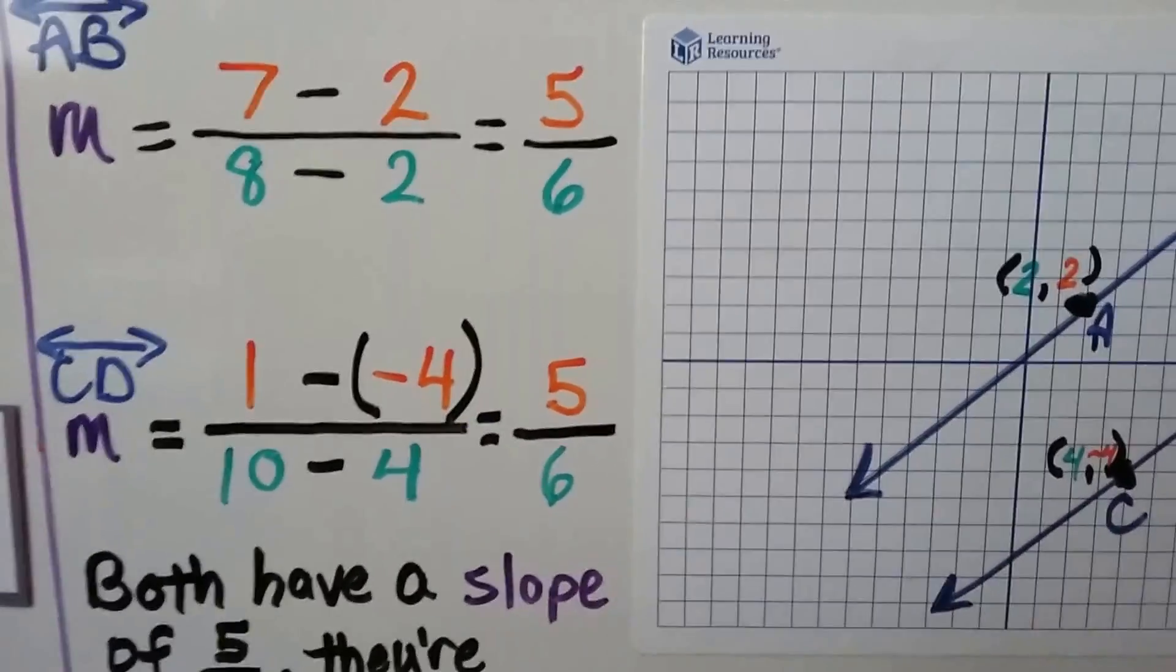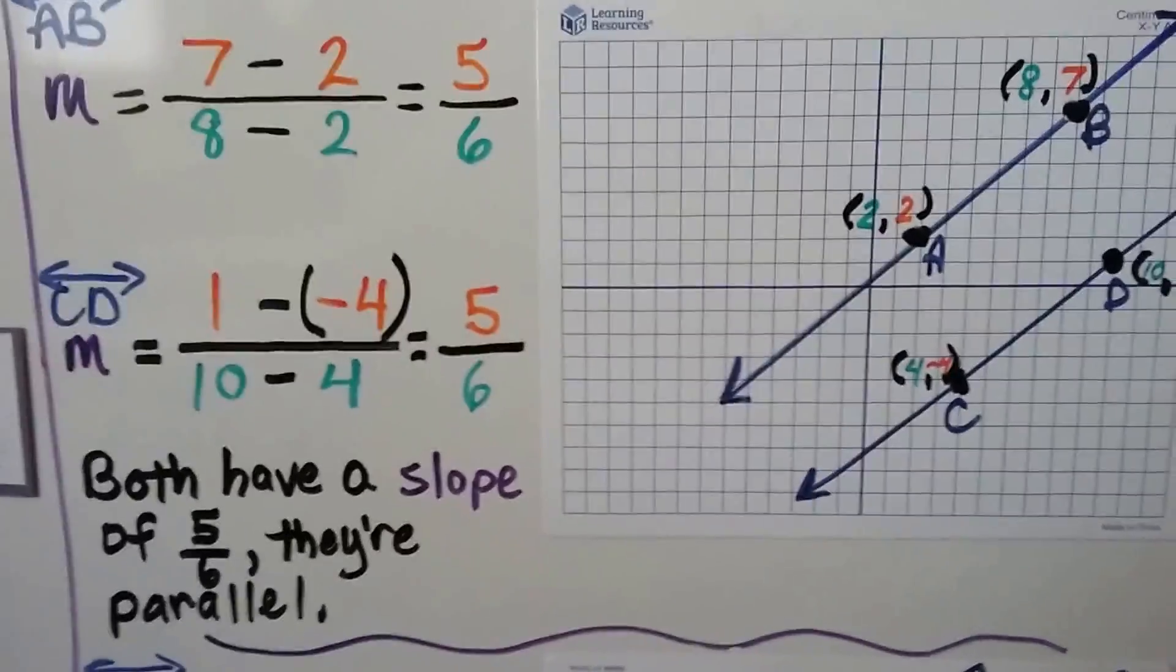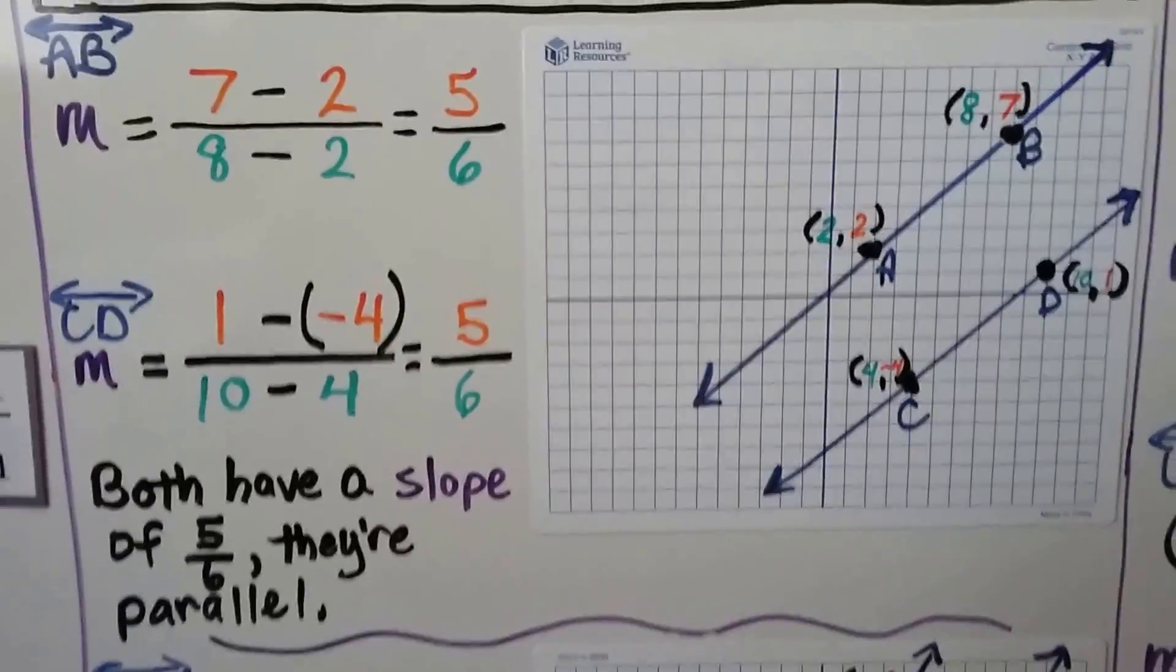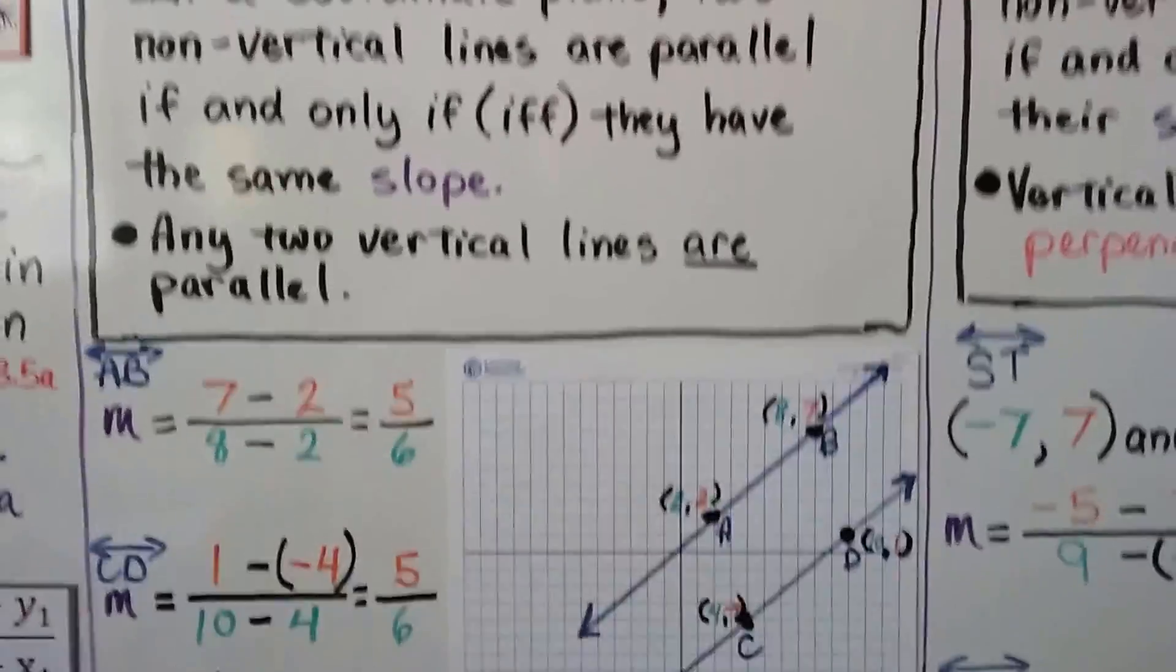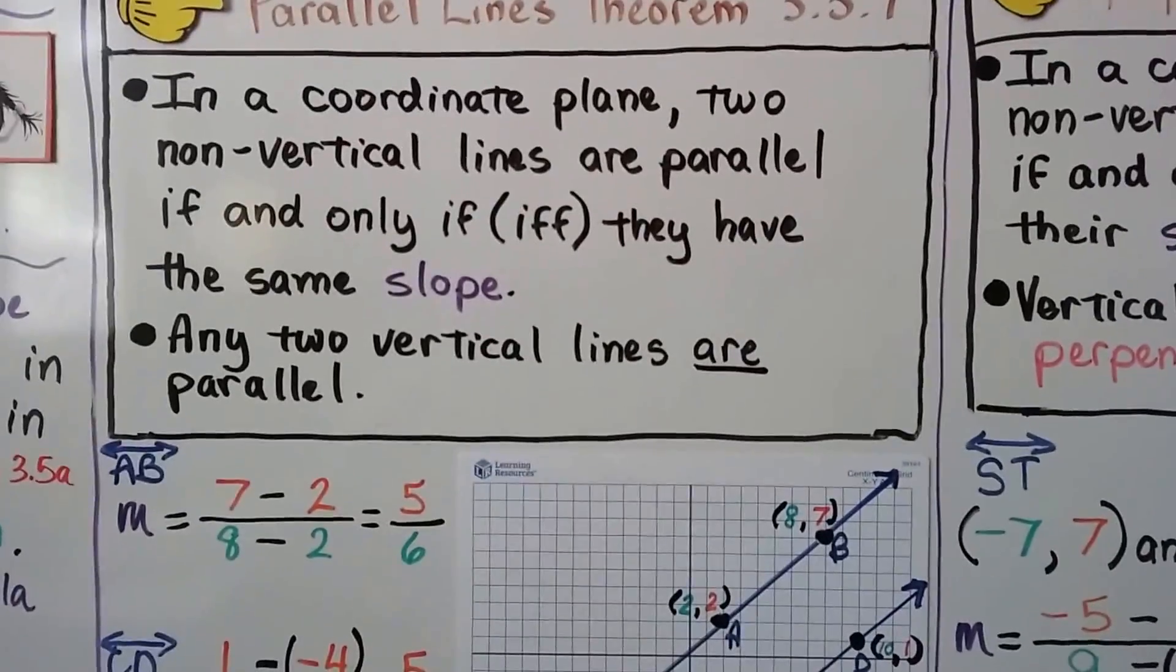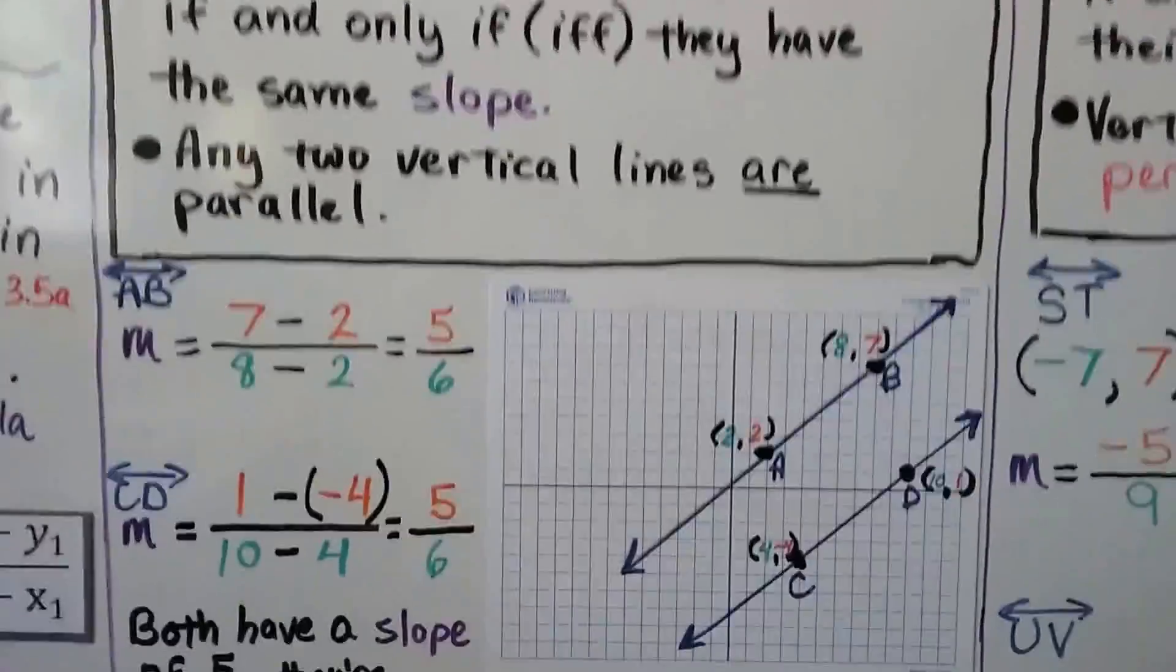Look, they both have a slope of 5/6, so they're parallel according to the parallel lines theorem. They have the same slope.